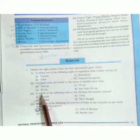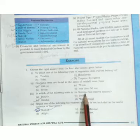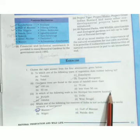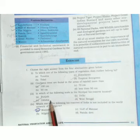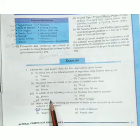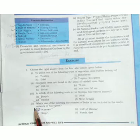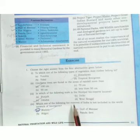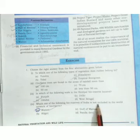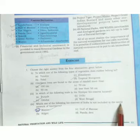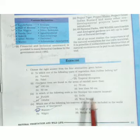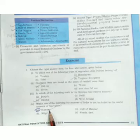Number three: in which state is the Simplipal bio reserve located? Answer: Odisha. Number four: which bio reserve of India is not included in the world network of bio reserves? Answer: Manas.